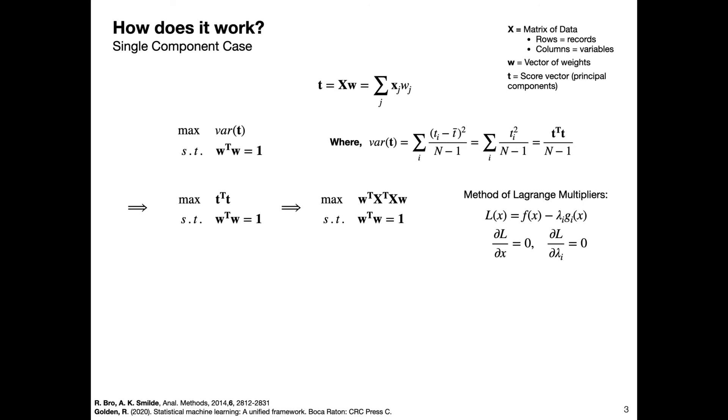This basically allows us to rewrite a constrained optimization problem as an unconstrained optimization problem. If none of that makes sense, that's fine—we just need these relevant expressions here. We can write out the Lagrangian, which is this L of x term here for our PCA optimization problem.